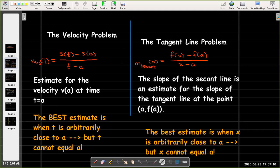In the case of the velocity problem, we can calculate the average velocity over an interval, and by choosing values of t that were closer and closer to the point where we wanted to know the exact velocity, we got better and better estimates.